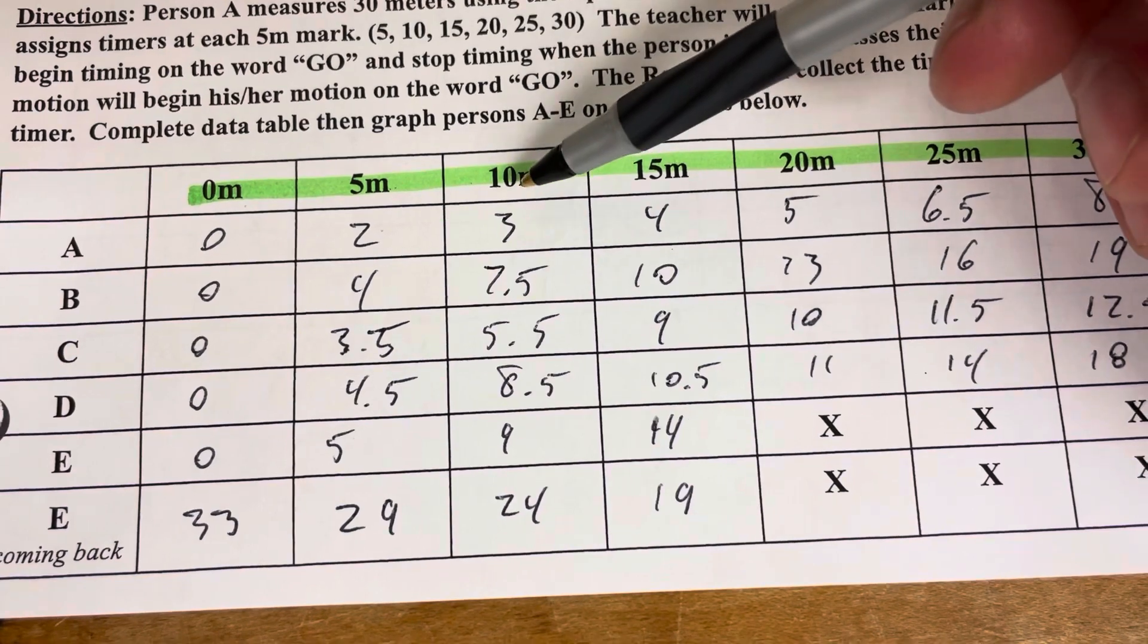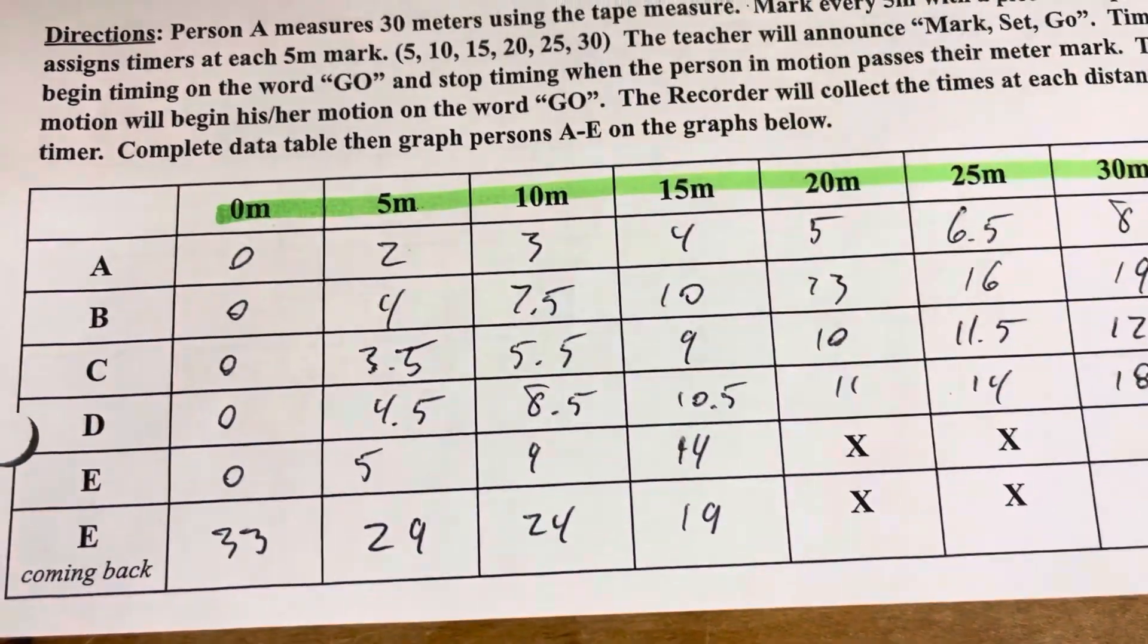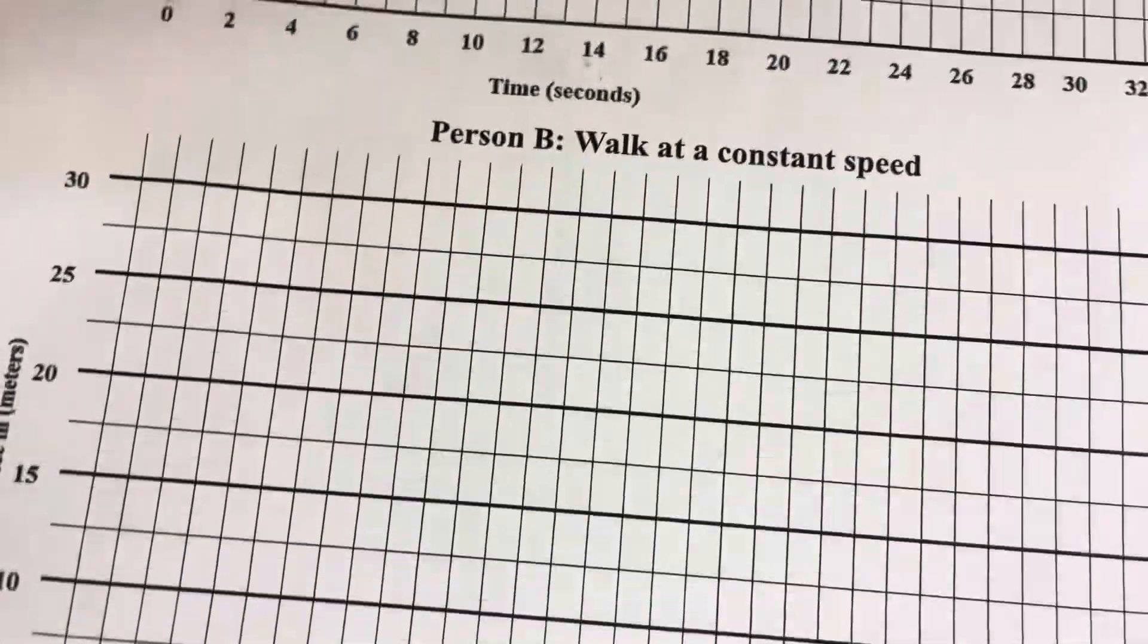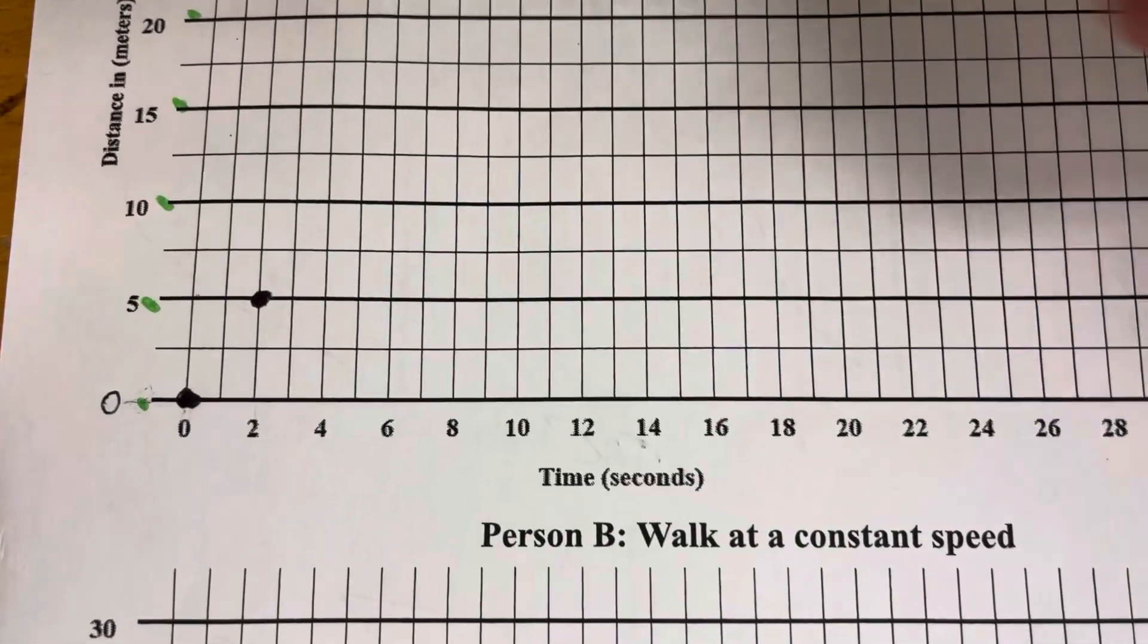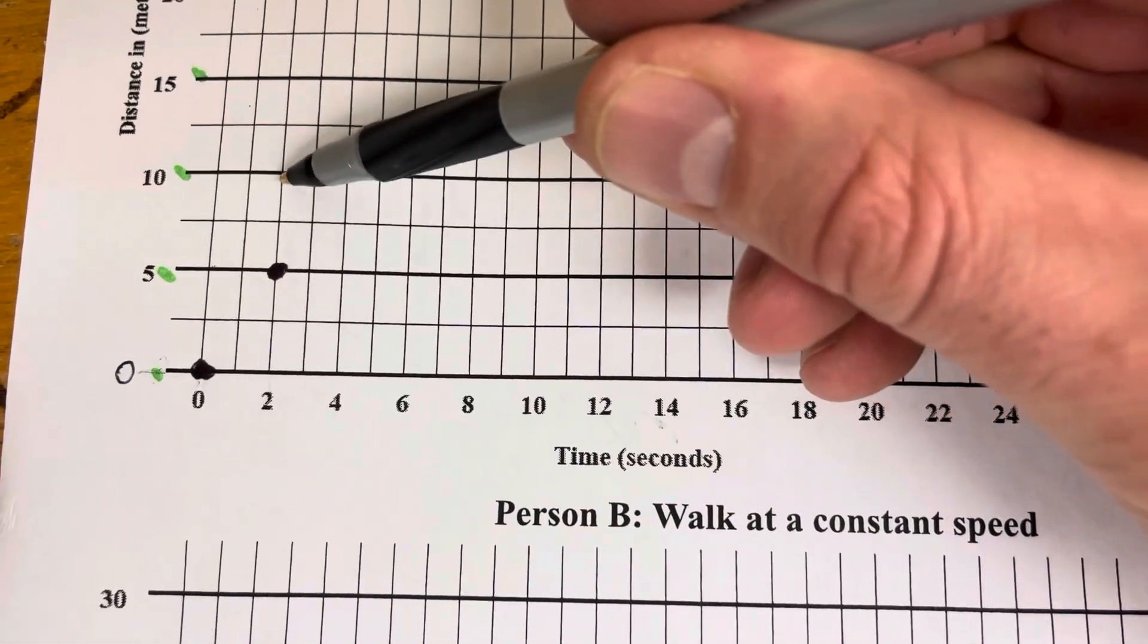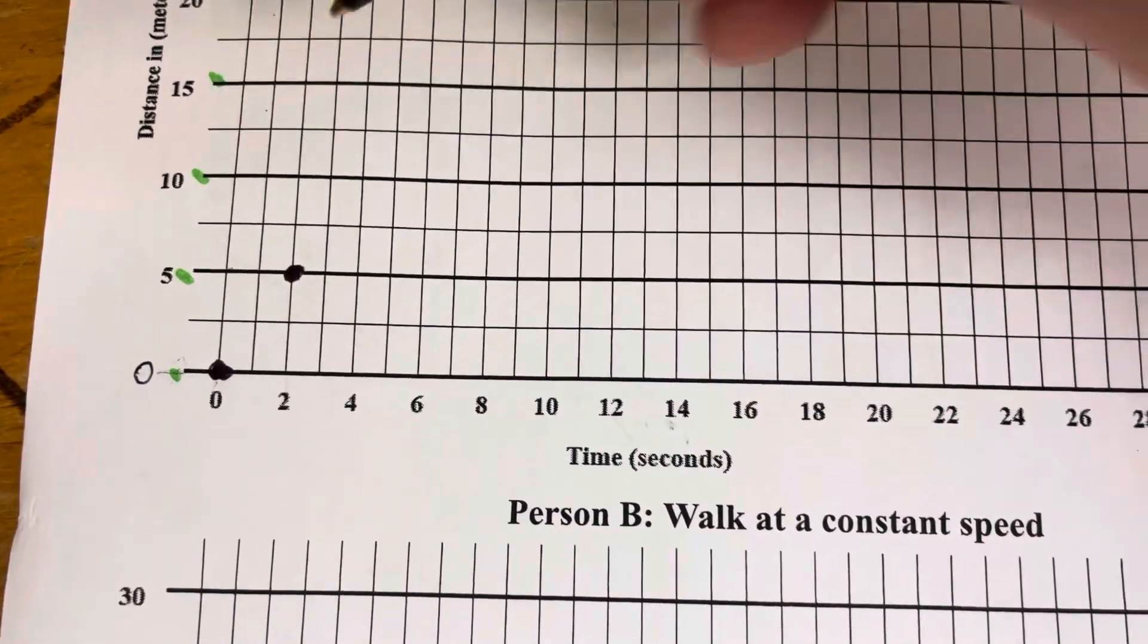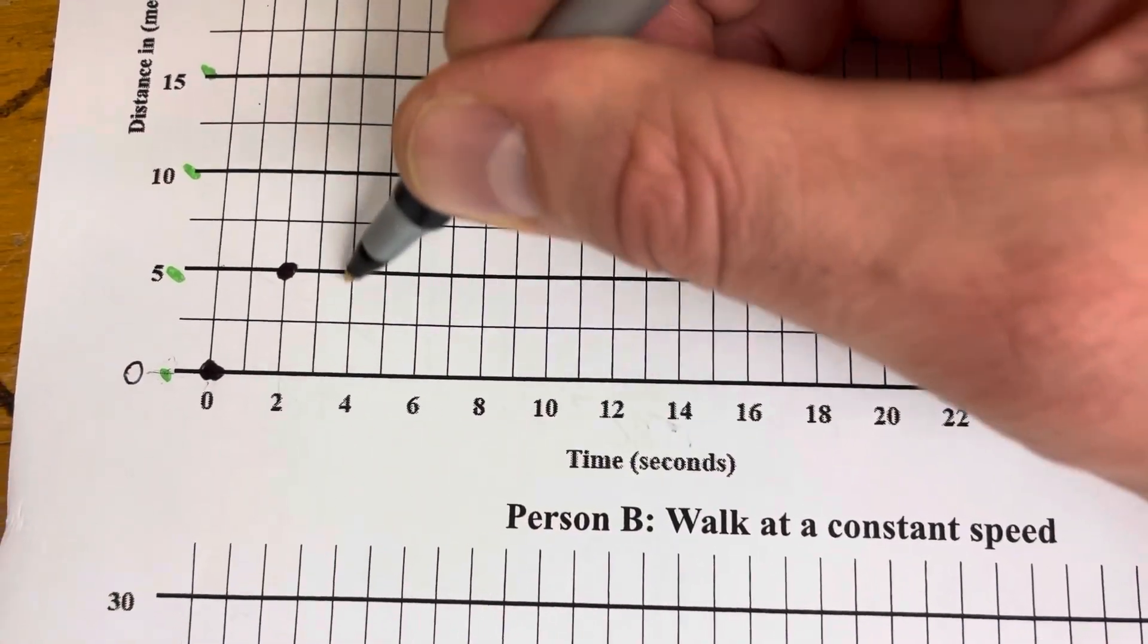Now to the 10 meter mark. It took them 3 seconds to get to the 10 meter mark. So back to the graph for person A. Go up to the 10 meter mark, go over to the proper amount of time.